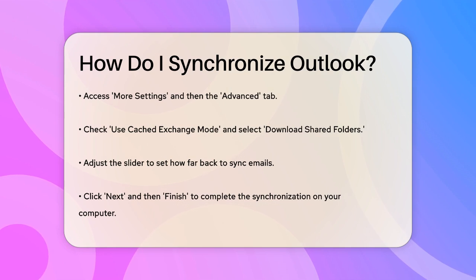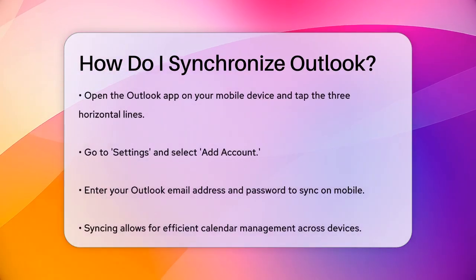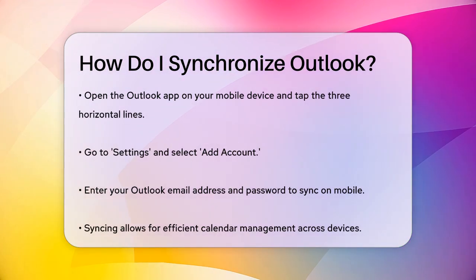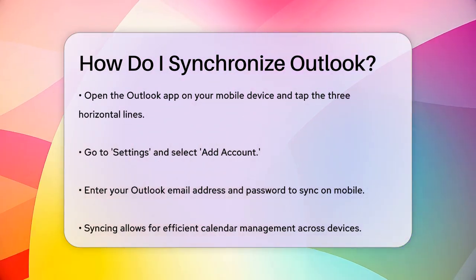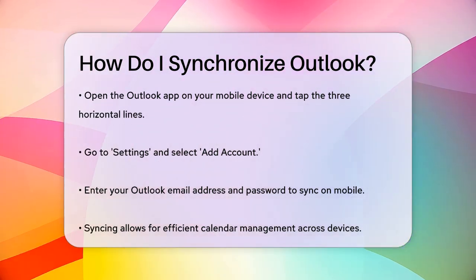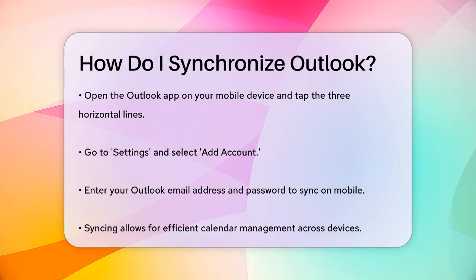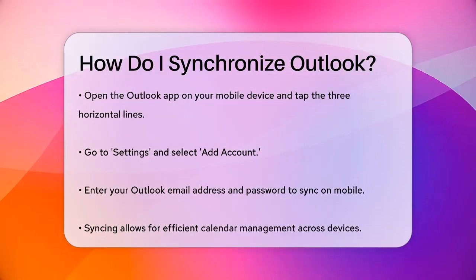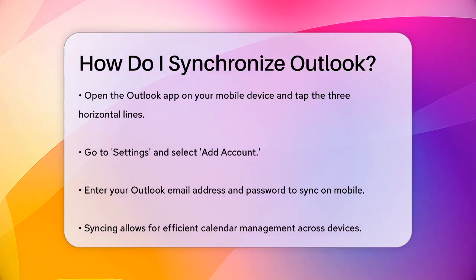Now let's move to your mobile device. Open the Outlook app and select the three horizontal lines in the upper left corner. Tap on Settings, the gear icon, and then Add Account. Enter your Outlook email address and password and follow the prompts to complete the setup. This will sync your emails, contacts, and calendar events across your mobile device.